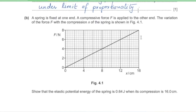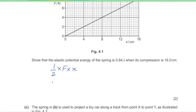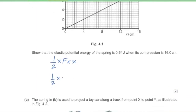Part B. A spring is fixed at one end and a compressive force F is applied to the other end. Show that the elastic potential energy of the spring is 0.64 joules when its compression is 16 centimeters. Elastic potential energy equals the area under the force-compression graph, which is ½ × F × x. When compression is 16 cm, F = 8 newtons, so ½ × 8 × 0.16 = 0.64 joules.